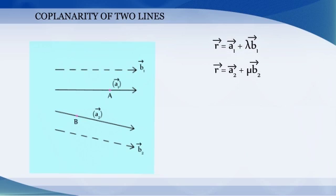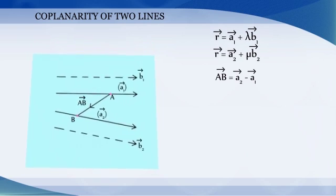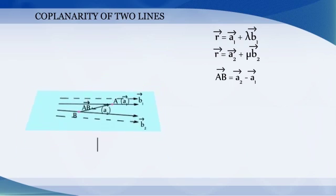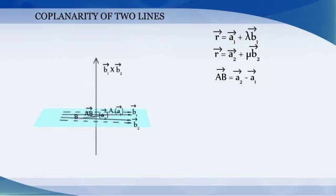Vector AB is equal to a2 vector minus a1 vector, and this vector is perpendicular to the plane containing the vectors b1 cross b2.